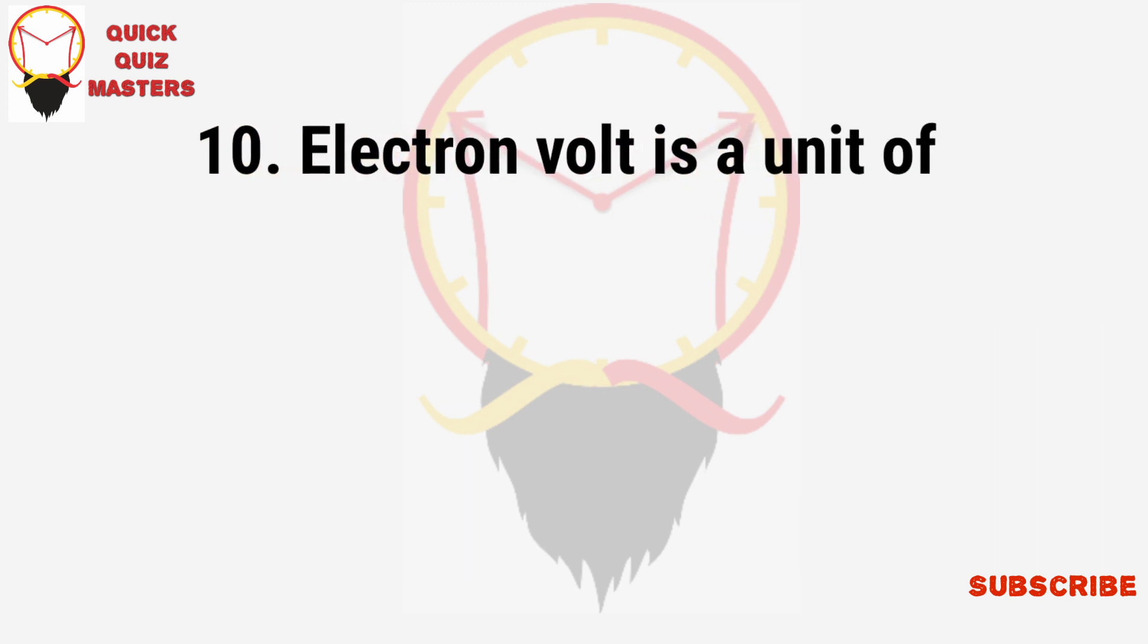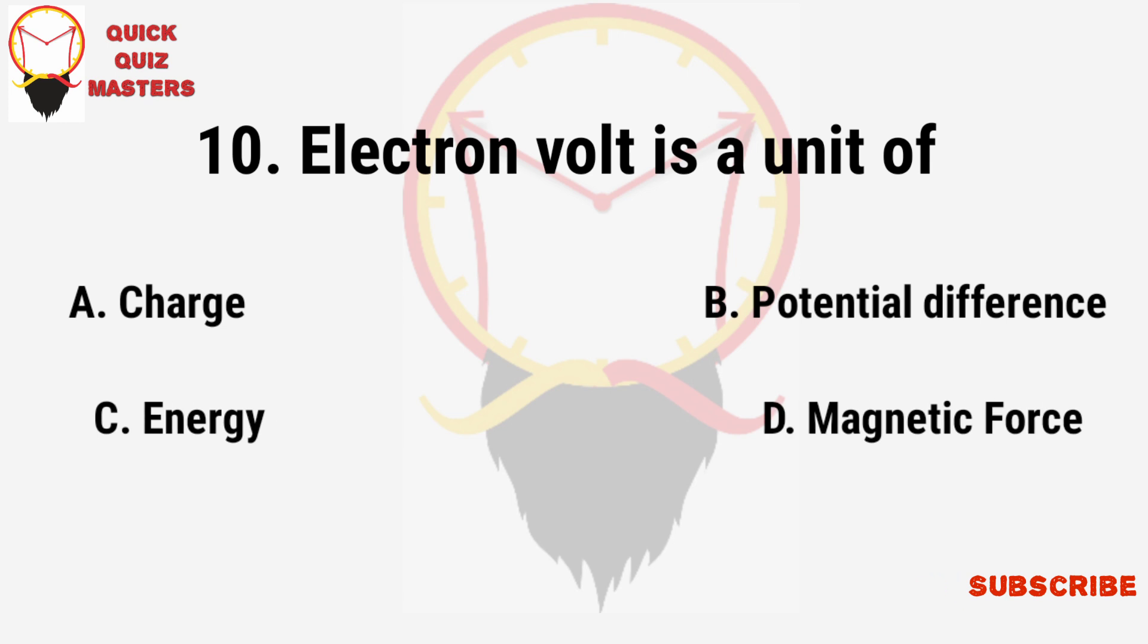Electron volt is a unit of: charge, potential difference, energy, magnetic force.